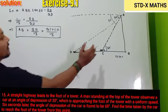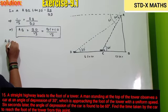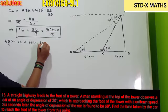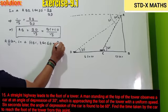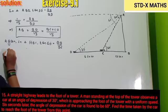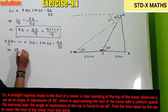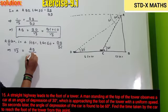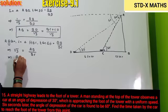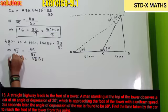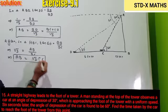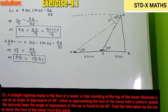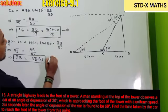Now we will consider the smaller triangle. In triangle ABC again, tan 60 degrees equals AP divided by BC. So root 3 equals AP divided by BC, which implies AP equals root 3 into BC. So we have AP equals root 3 into BC, and from equation 1, AP equals BC plus CD divided by root 3.